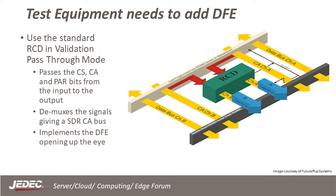A standard DDR5 RCD in validation pass-through mode provides both the DFE and the deceleration of the CA bus. So from a system perspective, it looks like two RCD loads in a single slot. The system trains with this extra load in the circuit. The interposer sits in the slot with the DUT in the exterior card connector, and the Q side of the RCD goes to the logic analyzer.